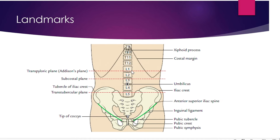Now there are some important abdominal planes. The transpyloric plane passes through L1 — it is an imaginary horizontal plane. Many important structures lie at this level: the pylorus (the distal tubular portion of the stomach), the fundus of the gallbladder, the neck of the pancreas, the hilum of the kidney, the origin of the superior mesenteric artery, the formation of the portal vein, and the root of the transverse mesocolon.